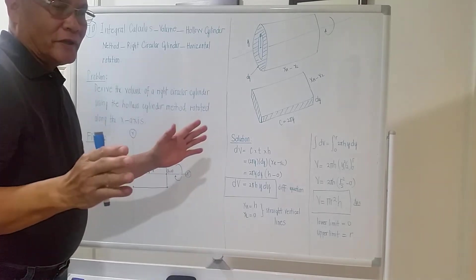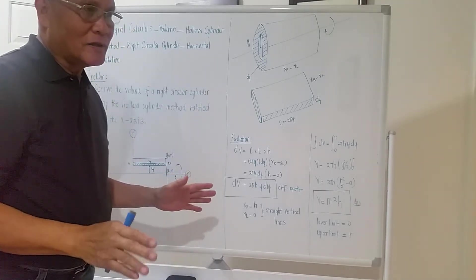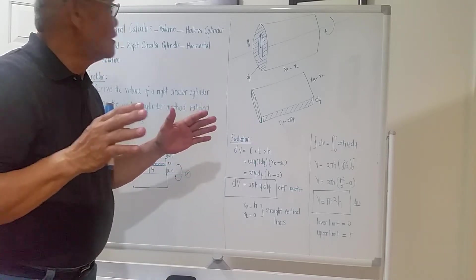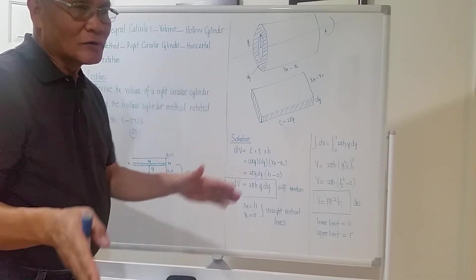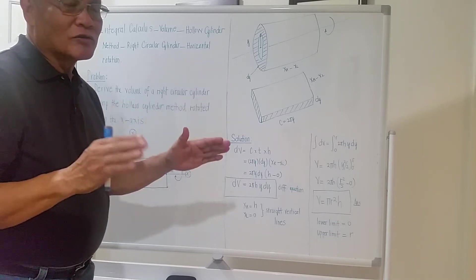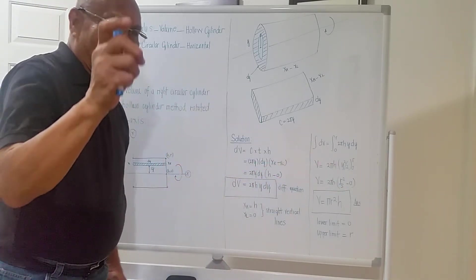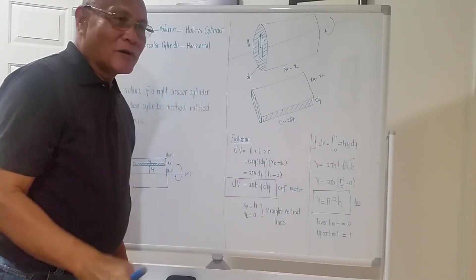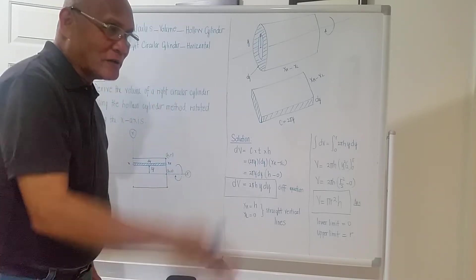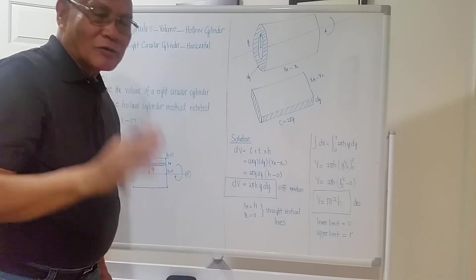The concentration of the topic tonight will be an easy solution using the right hollow cylinder method, but the rotation should be along the horizontal. The last example was rotated along the vertical line, so we will try to solve the problem.